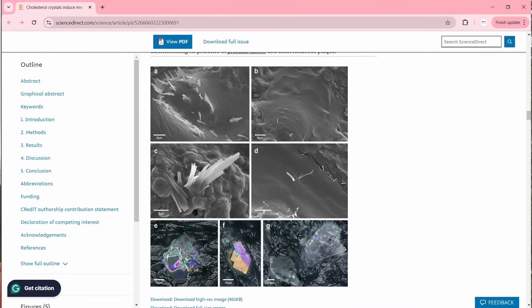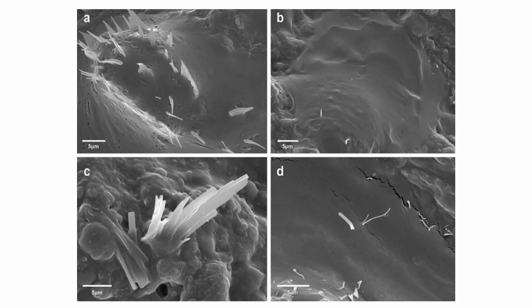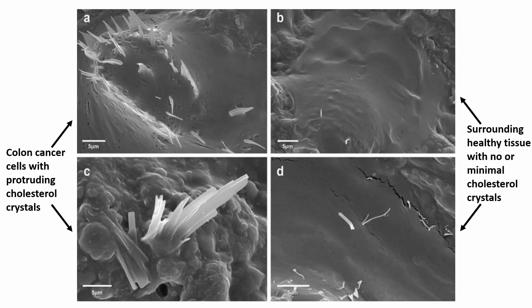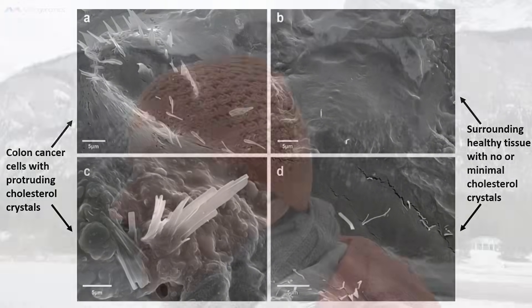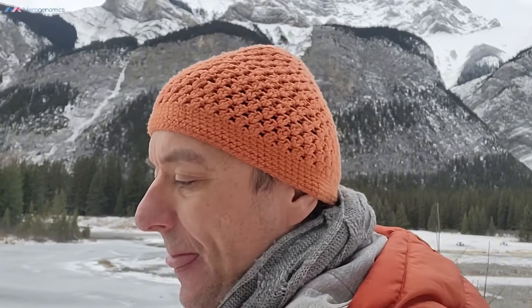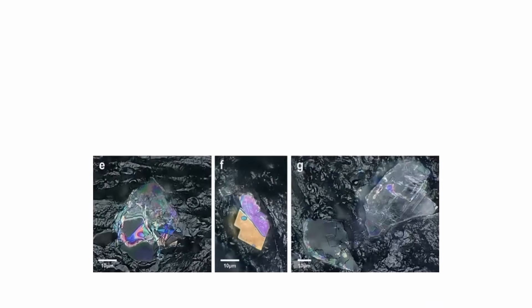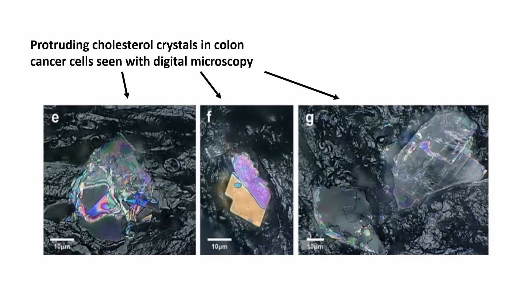The next images were my favorite part of the paper. They showed colon cancer in images A and C — the actual cancer cells. You see these wild spikes; the cells look like a hedgehog. They compared this to the margins around the cancer cells, where there were basically almost no crystals — very few white specks but nothing like the actual cancer cells. So it's clearly evident that cancer cells are very different in their morphology from normal tissue. They also showed more photographs using digital microscopy, and once again you see these cholesterol crystals refracting light and poking through the cells.